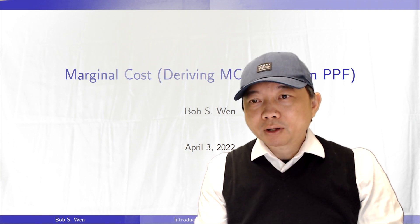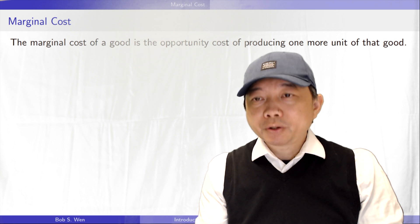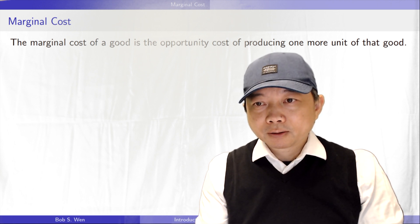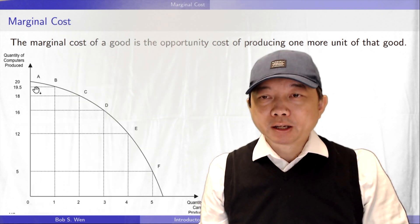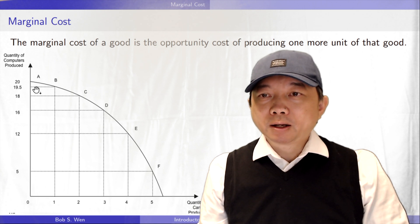The marginal cost of a good is the opportunity cost of producing one more unit of that good. For example, from the production possibilities frontier curve we used in the last video,